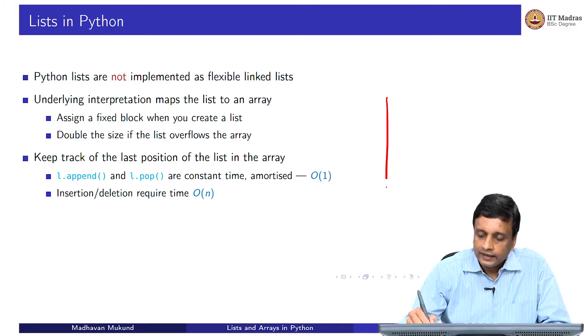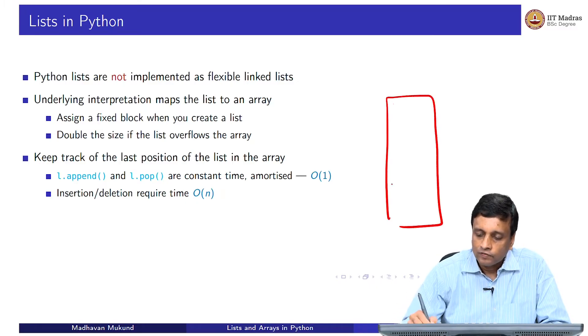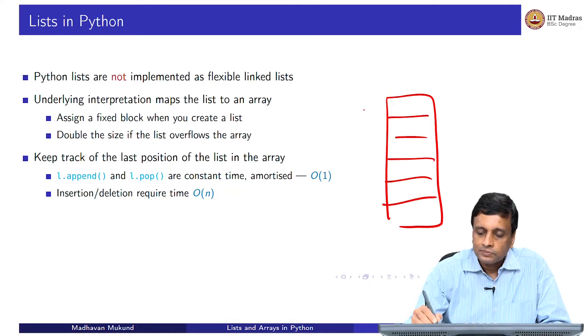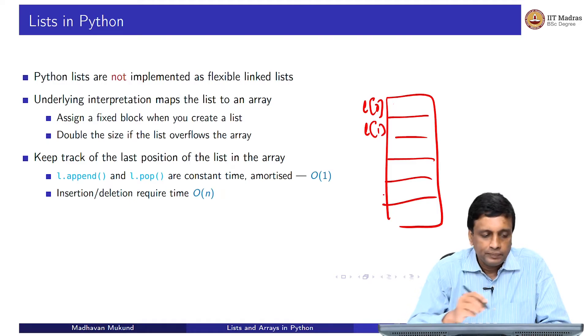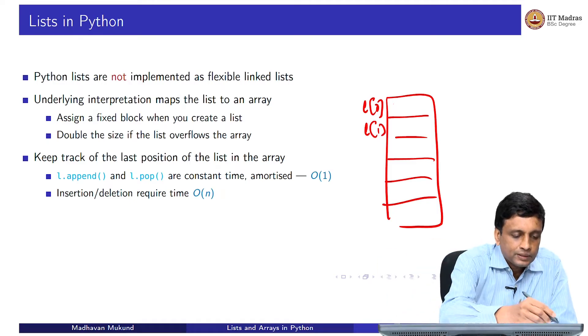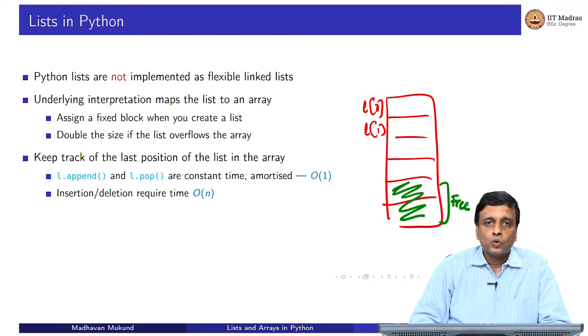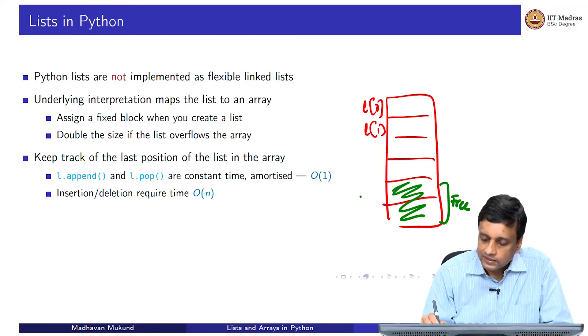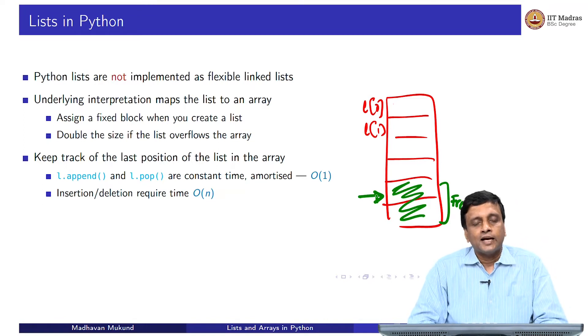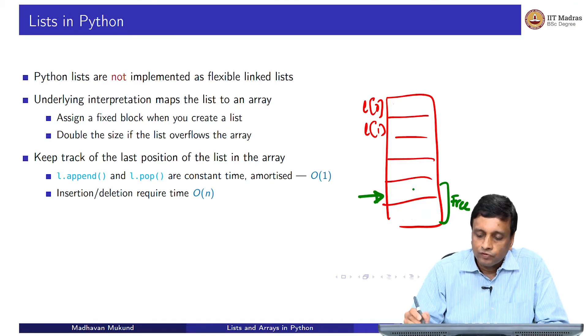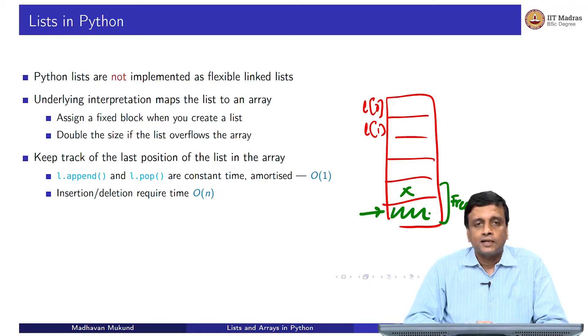Effectively, when you are working on a list and the size does not change much, you are manipulating it within an array. Inside this array, this is my L0, L1 and so on. In general, there will be at the end of the array some unused space because the array that is given to me is bigger than the list that I am actually storing in it. Python keeps track of this position, the last position. If you want to add an element to the array, it is very simple. You just put a new element here, you move this pointer and now your free space starts at this point.